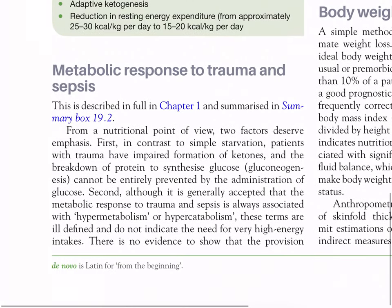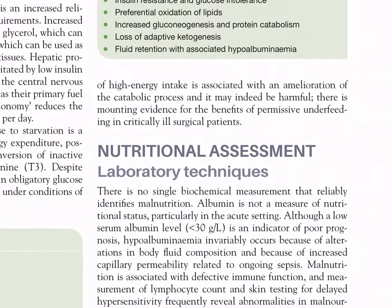Metabolic response to trauma and sepsis is described in full in Chapter 1 and summarized in Summary Box 19.2. From a nutritional point of view, two factors deserve emphasis. First, in contrast to simple starvation, patients with trauma have impaired formation of ketones and breakdown of protein to synthesize glucose; gluconeogenesis cannot be entirely prevented by the administration of glucose. Second, although the metabolic response to trauma and sepsis is associated with hypermetabolism or hypercatabolism, there is no evidence that provision of high energy intake ameliorates the catabolic process and it may indeed be harmful.